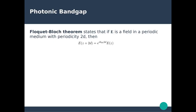The Floquet-Bloch theorem states that if we have an electric field within a periodic medium with periodicity 2d, then the electric field at position z + 2d is simply the electric field at position z multiplied by a phase factor. This exponential introduces a Bloch wave vector that is dictated by the periodicity and composition of the periodic arrangement of materials.